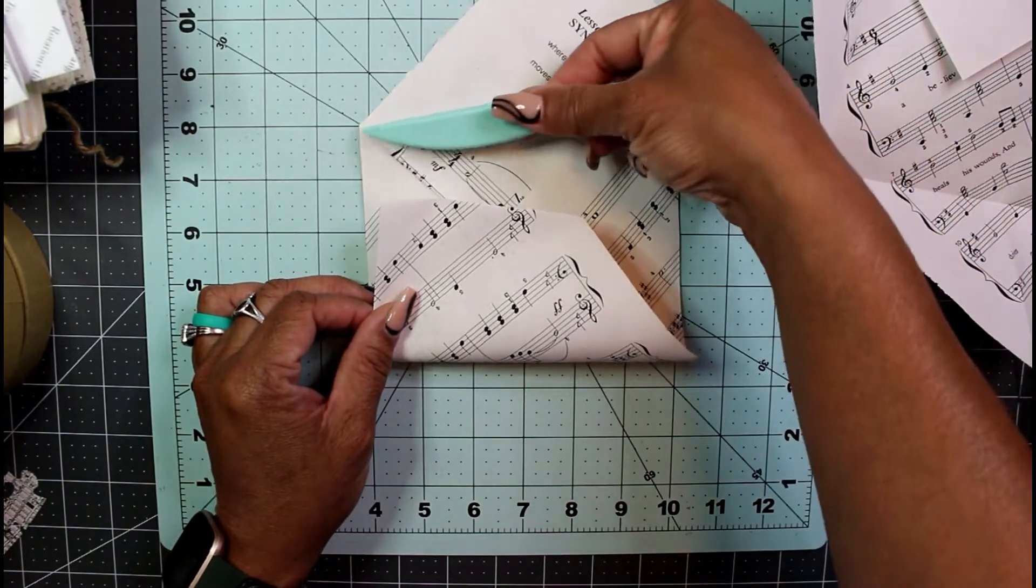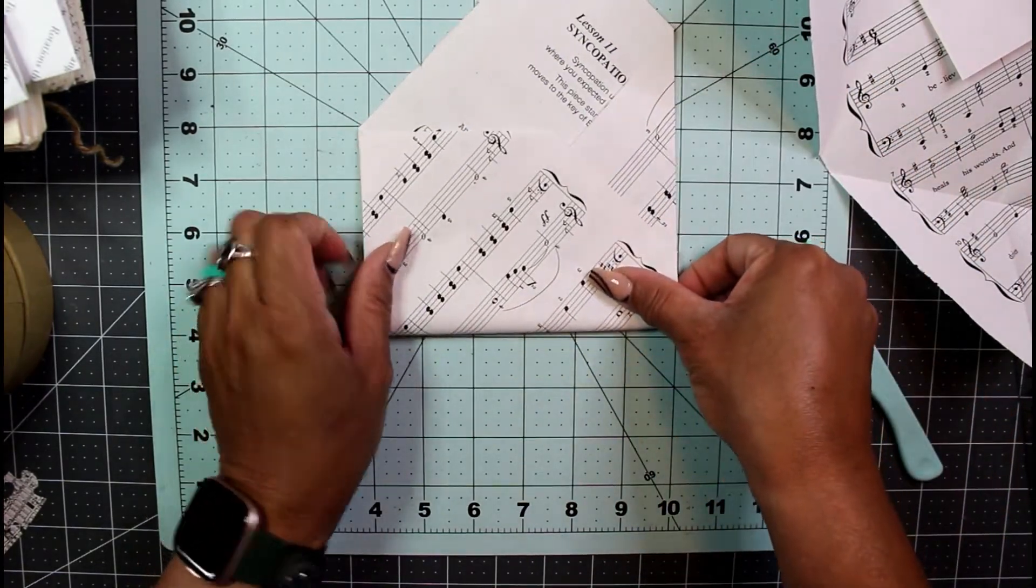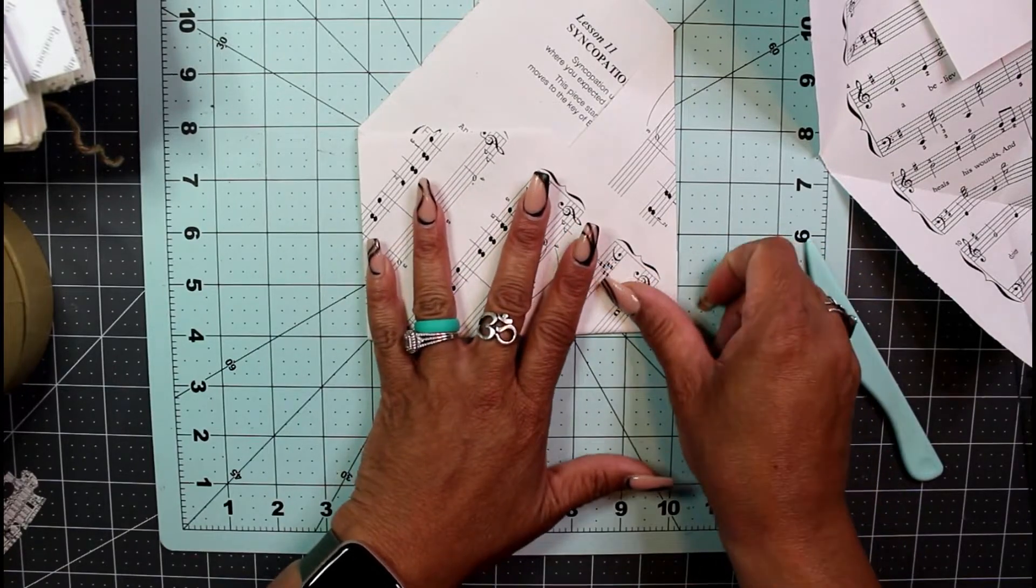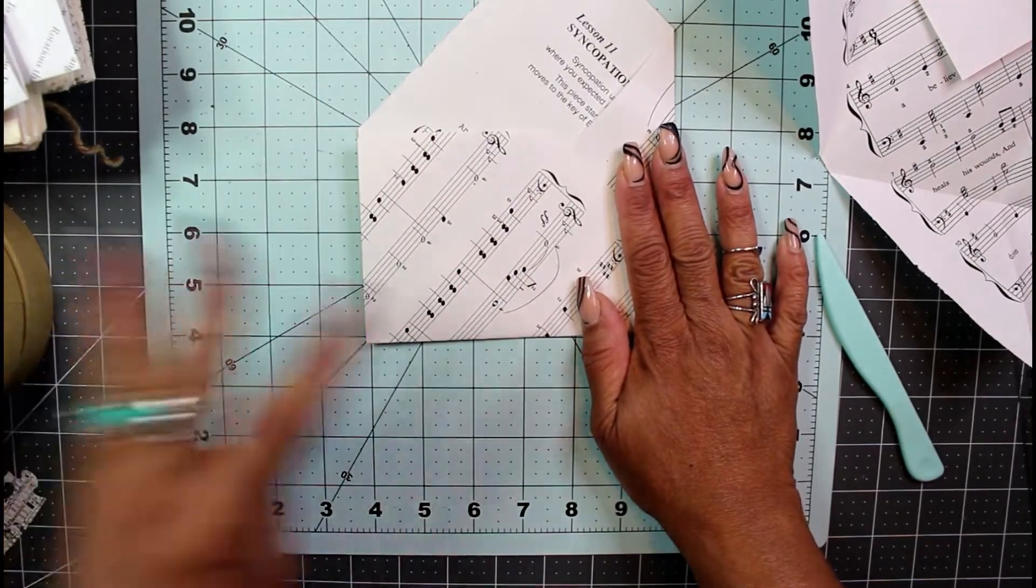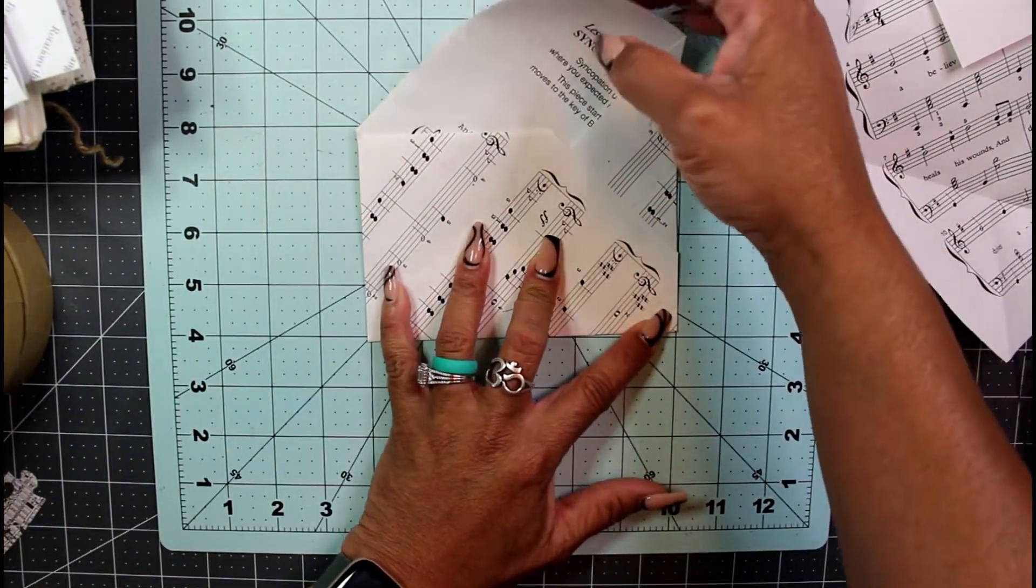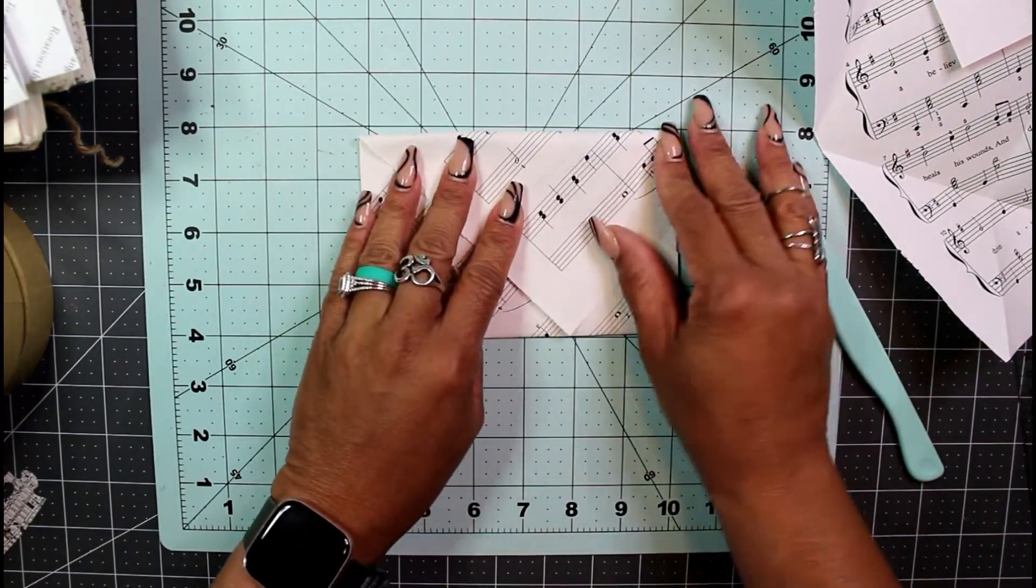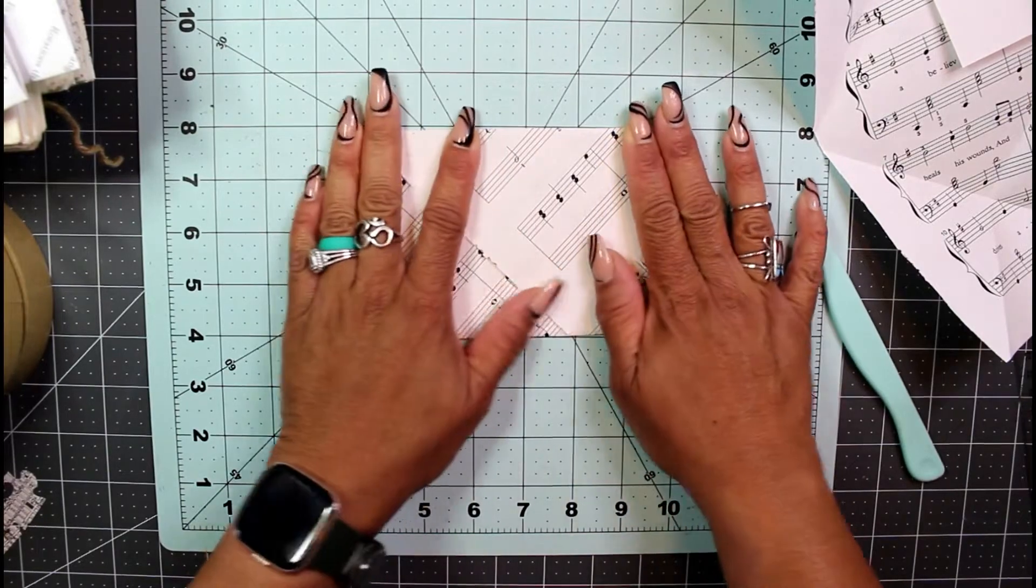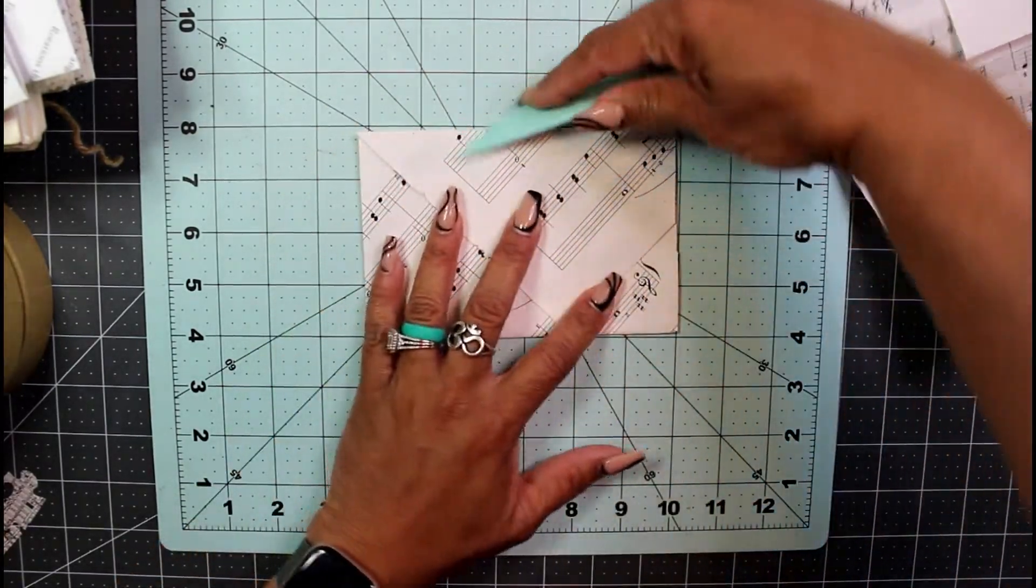So now we have this - isn't this cool? This is already looking like an envelope. And to finish it off you just take your top flap and bring it down.